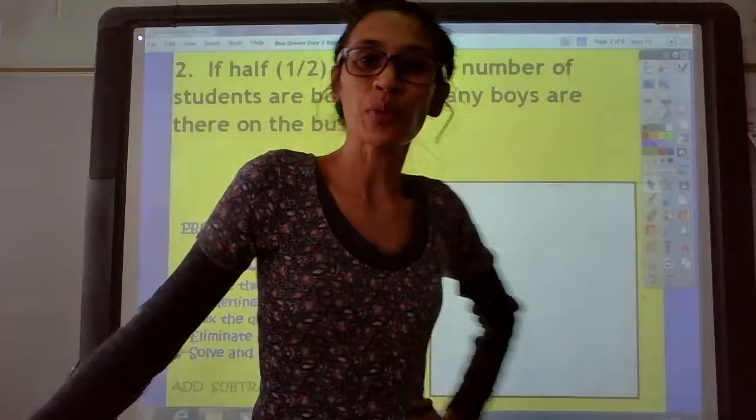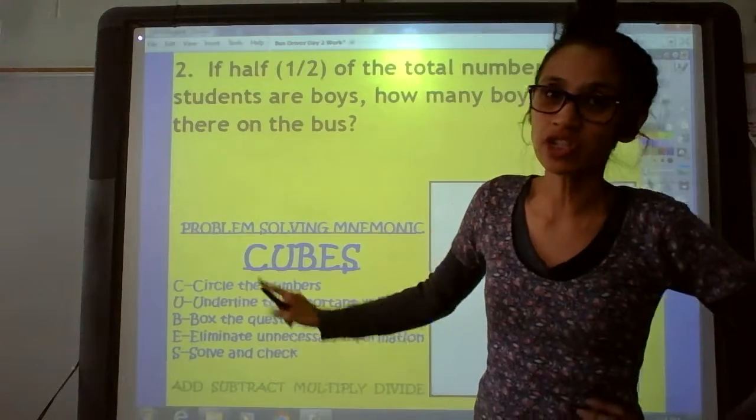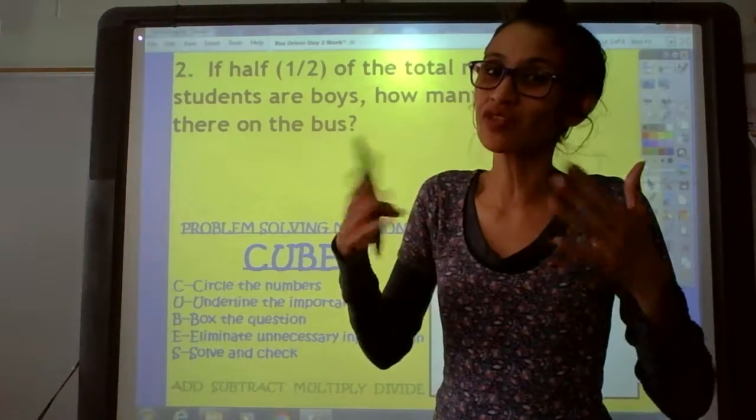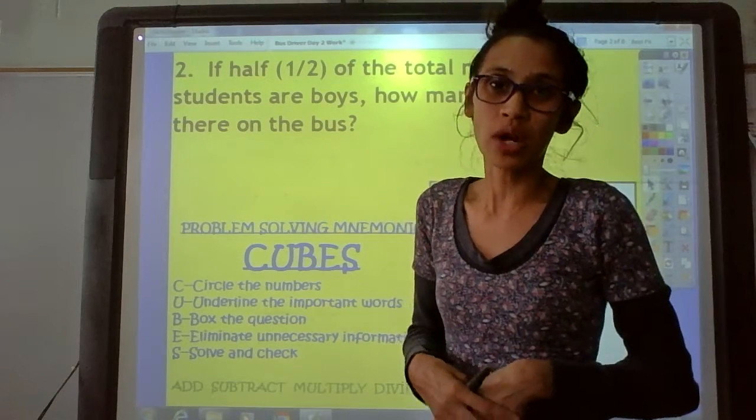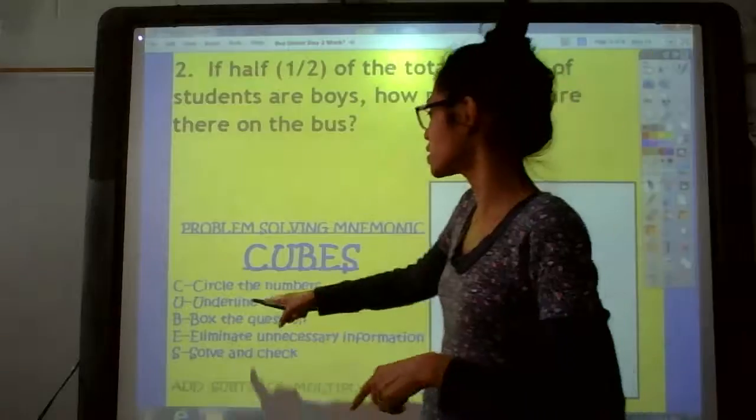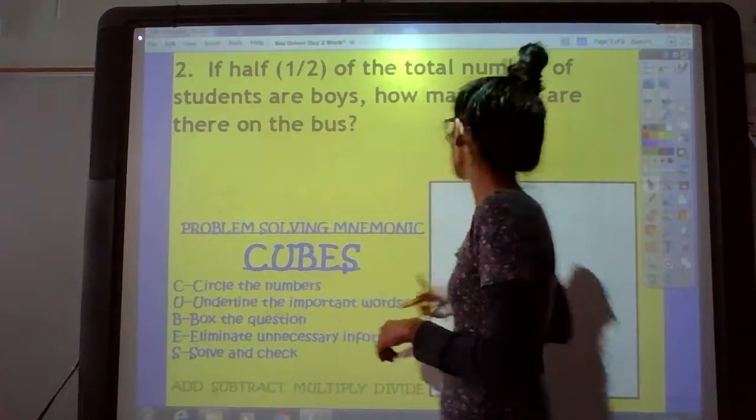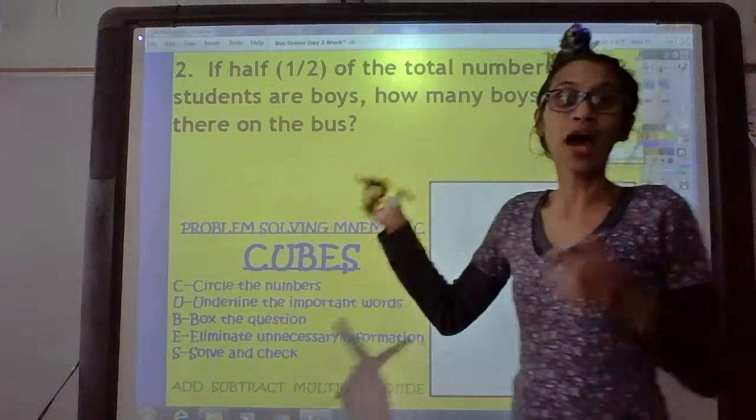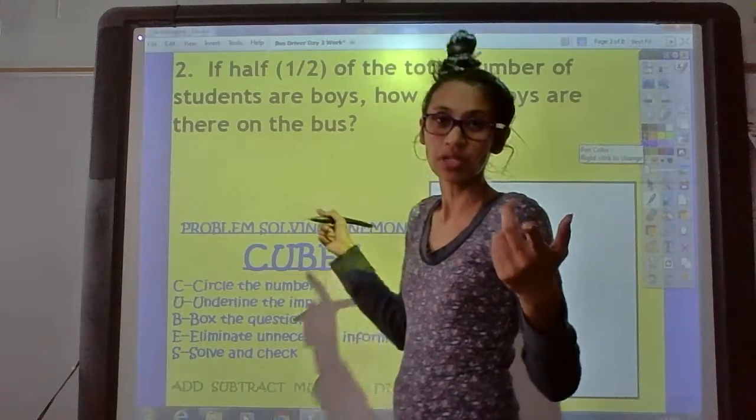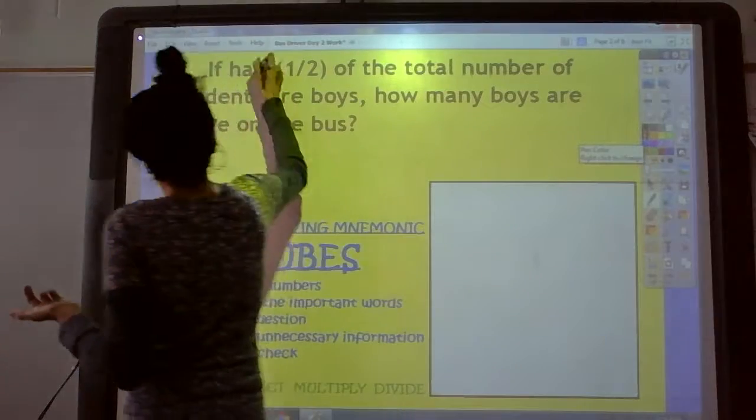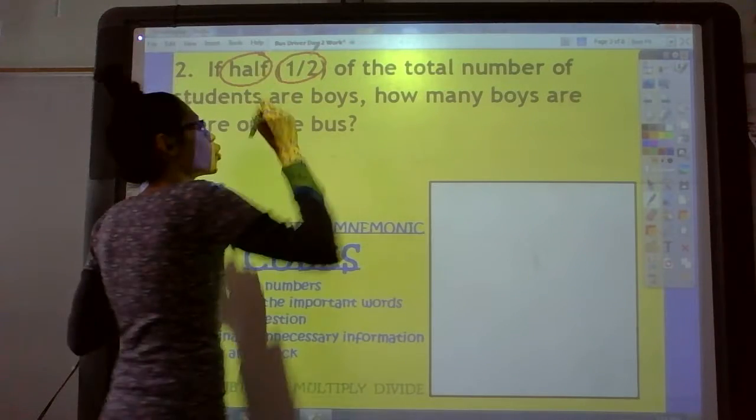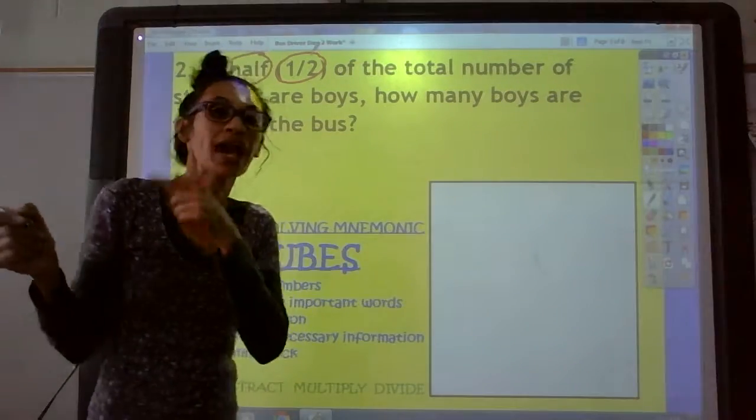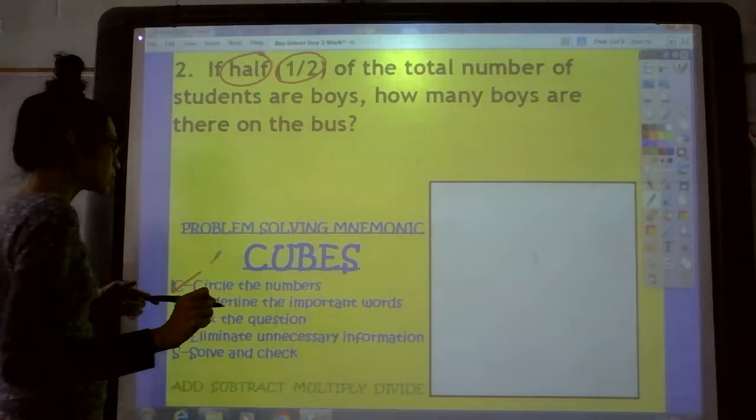Remember that we can use our problem-solving mnemonic device CUBES, not an actual cube, but those letters stand for steps to help us solve this problem. So let's do the first step, the C step. It says circle the numbers. Can you find me the numbers? Call out the numbers. We have half, right there, one half. That's it. That's the only numbers that we have, so we are done with the C step.